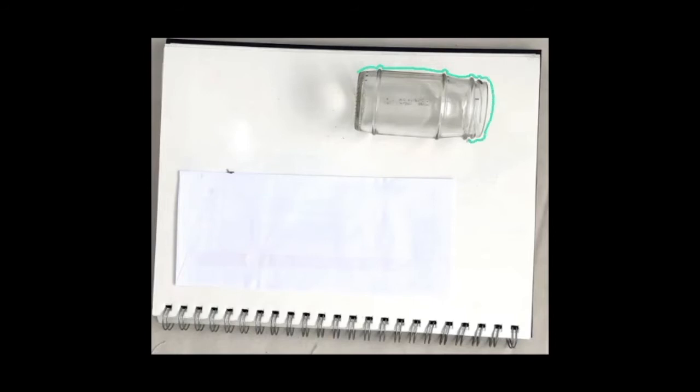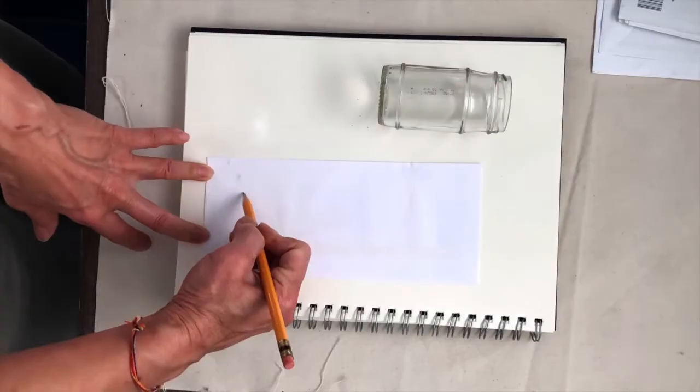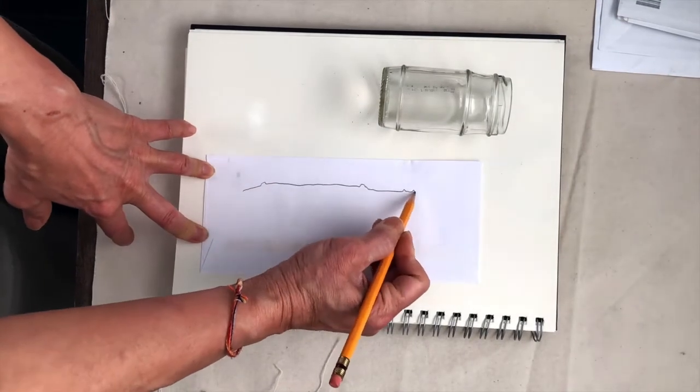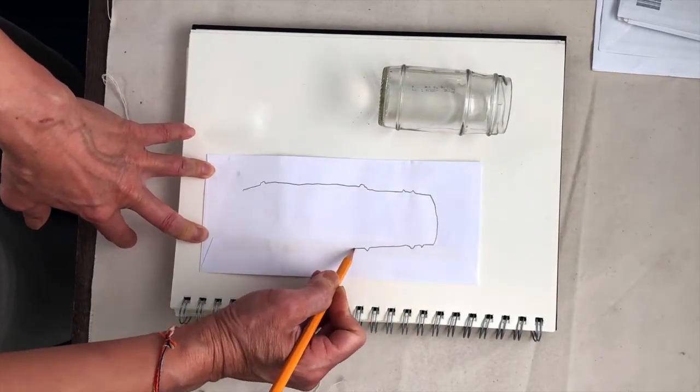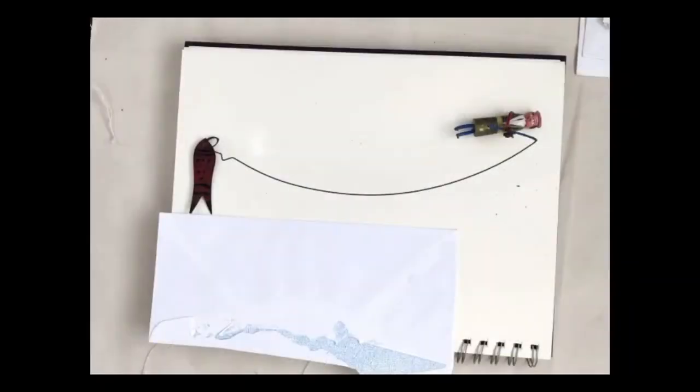The lip, the little bumps, the ridges, the side. And forget that it's a jar. Pretend you're a little ant crawling around the perimeter of this object. So you're training your eye to flatten something 3D onto something 2D. Voila.